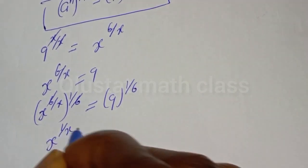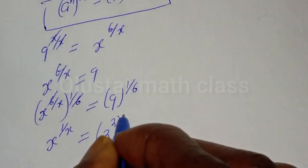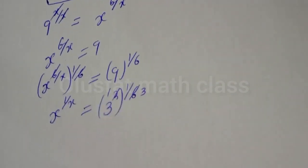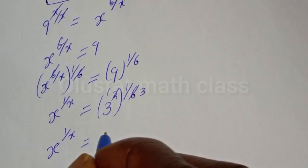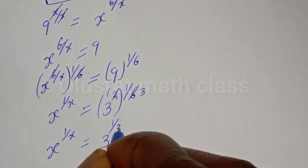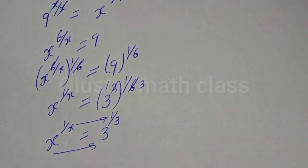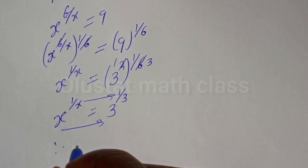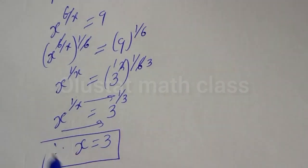3 raised to power 1 over 6 is equal to 3 raised to power 1 over 3. Therefore, if you compare this, the base is equal to 3 and the exponent is equal to 1 over 3. Therefore, our answer is s is equal to 3. This is the final answer.